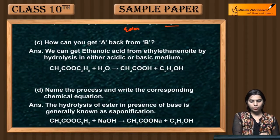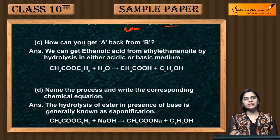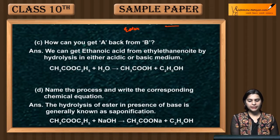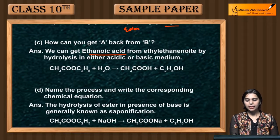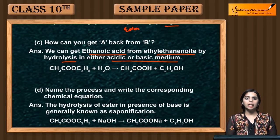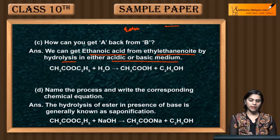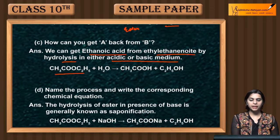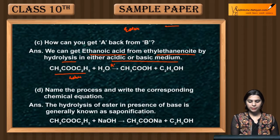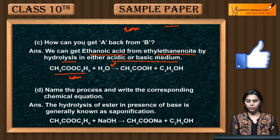How can you get compound A back from compound B? We can get ethanoic acid from ethyl ethanoate by hydrolysis in either acidic or basic medium. If we carry out ester hydrolysis in acid medium or basic medium, then we will get acid and ethanol reverted back.